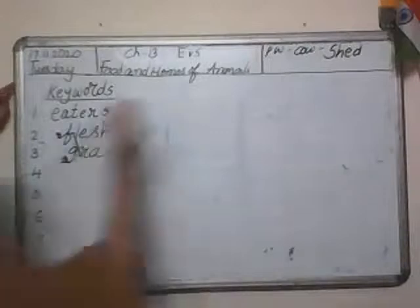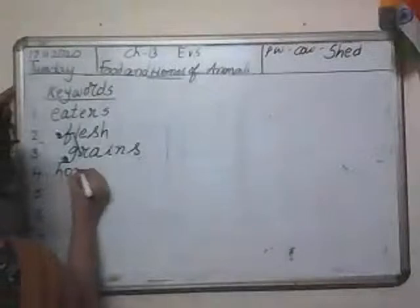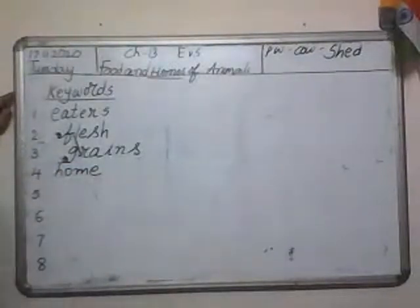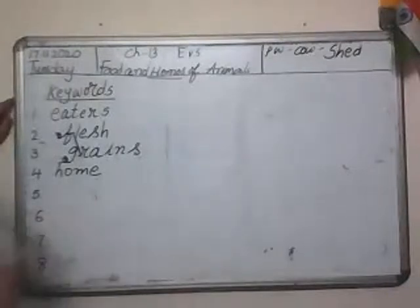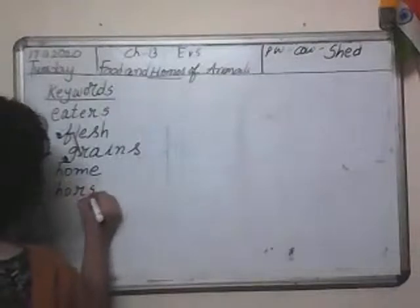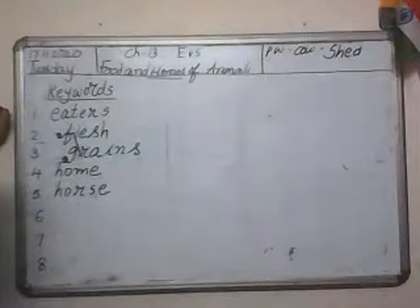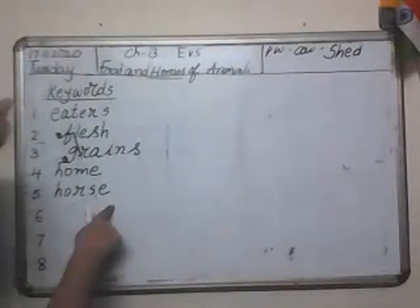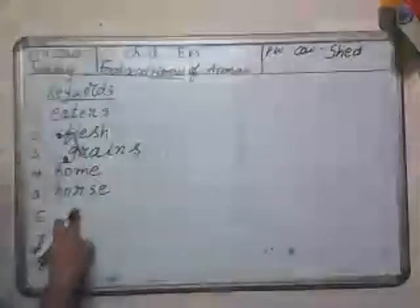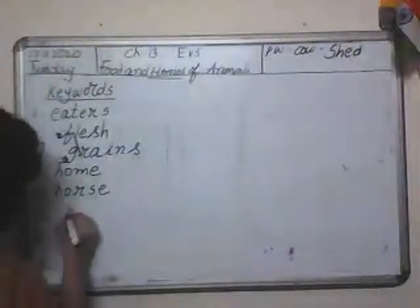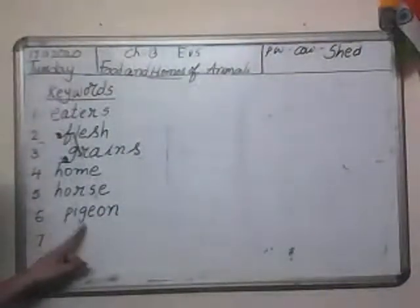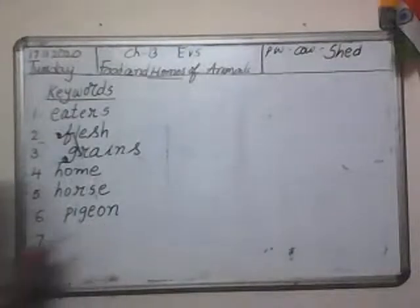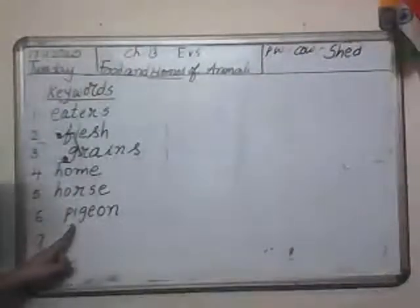You also need to know the spelling of 'home': H-O-M-E, home. Then let us learn the spellings of some animals — like 'horse': H-O-R-S-E, horse. Horse is a plant eater. And 'pigeon': P-I-G-E-O-N, pigeon. Pigeon is a grain eater.